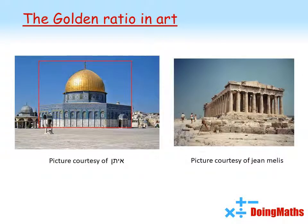It's not just used in art — the golden ratio is also used in architecture. Here we have pictures of the Dome of the Rock in Jerusalem and the Parthenon in Athens. If you look at these two buildings you will find the golden ratio all over them. For example, on the Dome of the Rock we've drawn it surrounded by a rectangle with sides in the ratio of one to the golden ratio, and again it creates a beautiful form.